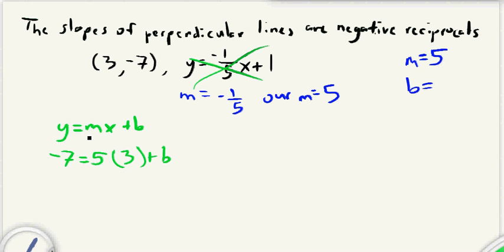So now we're just going to simplify this and solve. We get negative seven equals five times three is 15, plus b. To solve for b, we're just going to subtract 15 from both sides, and so we get that negative 22 equals b. So our b is negative 22.